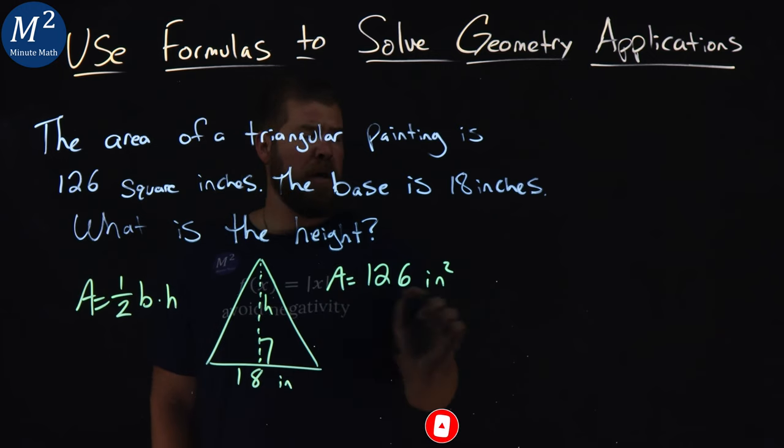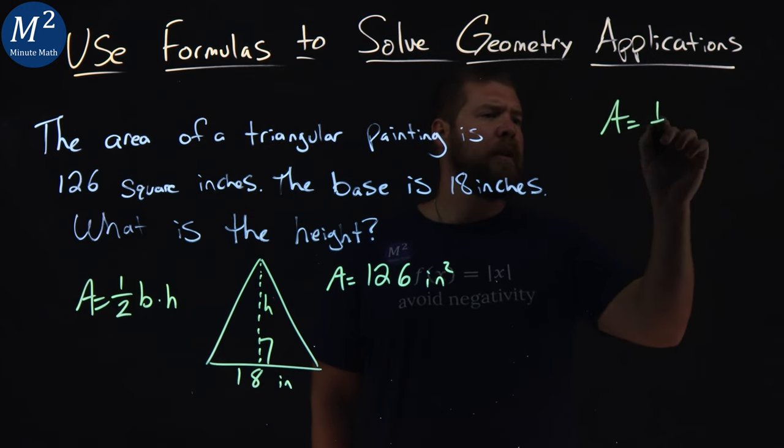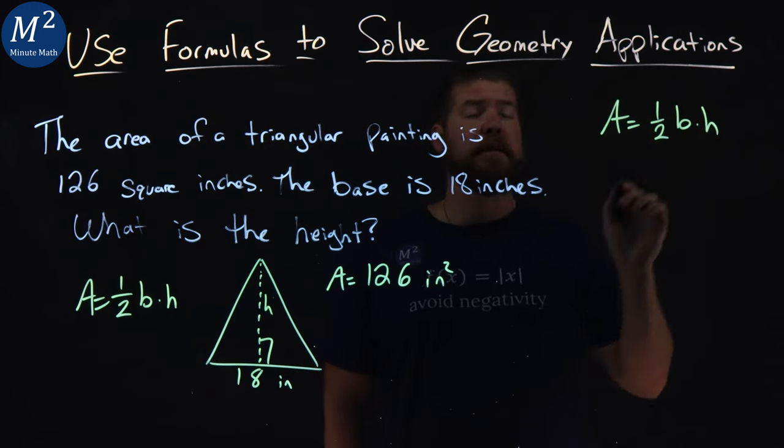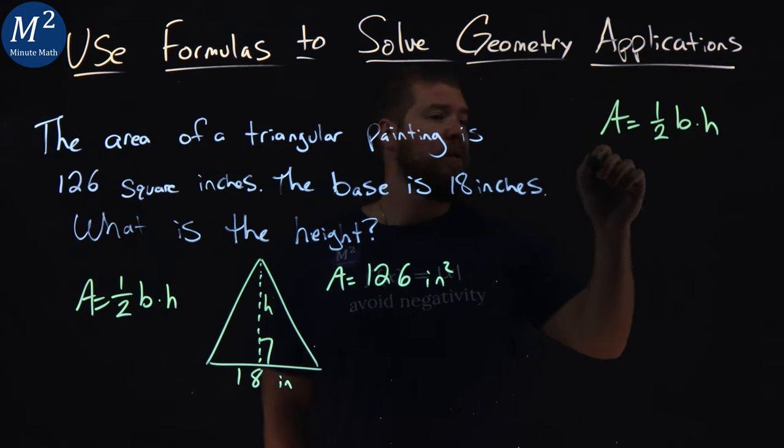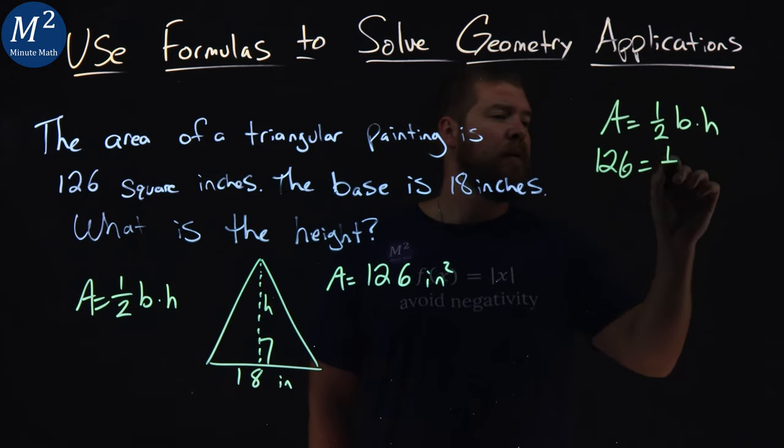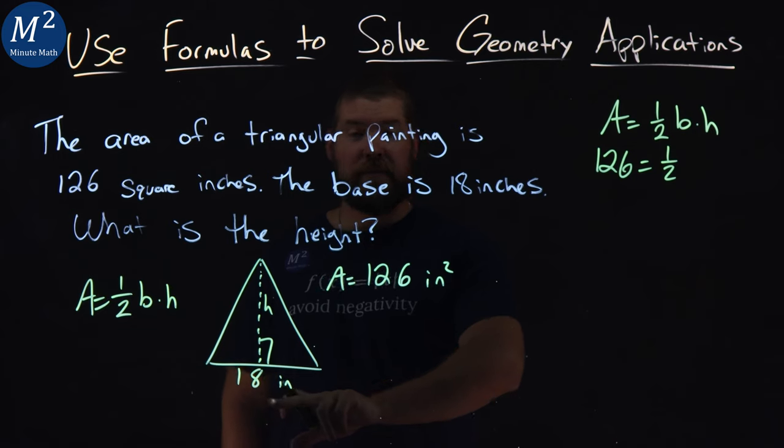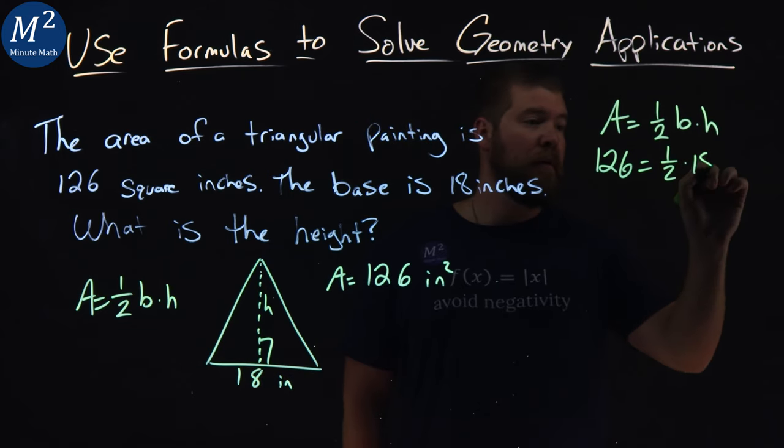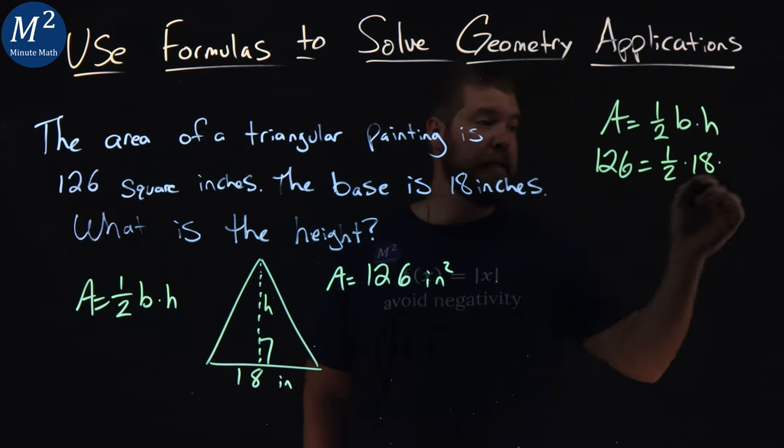That's what they're asking for. So area equals one-half base times height. We know the area is 126. We have one-half times our base, 18 inches, and we need to find the height h.